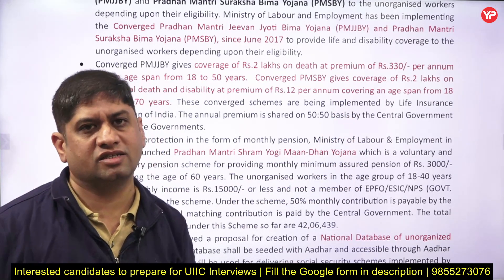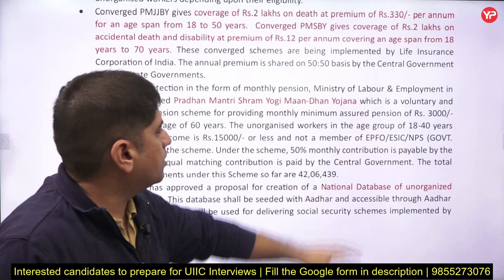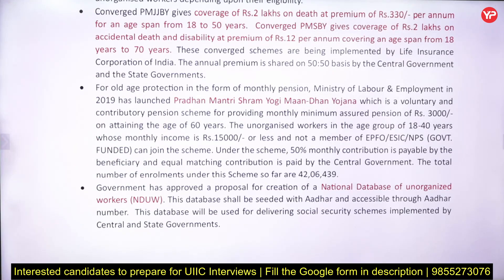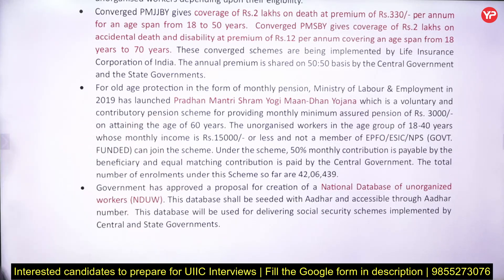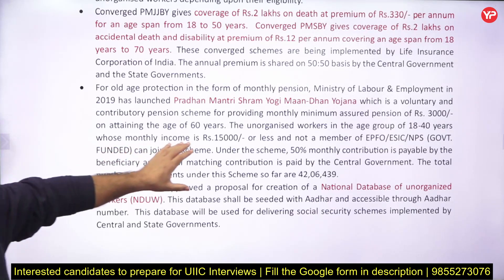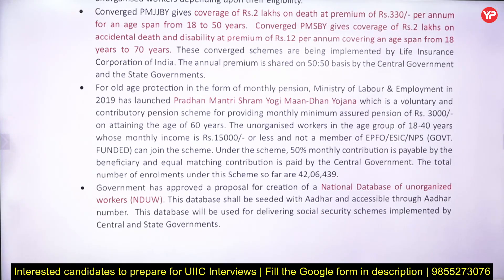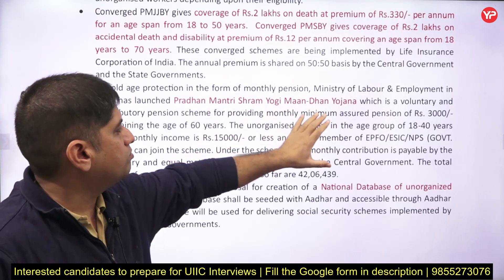Pradhan Mantri Shram Yogi Mandhan Yojana provides old age protection in the form of a monthly pension. It is a voluntary contributing pension scheme launched by the Ministry of Labour and Employment, providing a minimum monthly pension of 3000 rupees once you turn 60 years. It is for unorganized workers aged 18 to 40 with a monthly income less than 15,000 rupees who are not members of EPFO. You contribute 50% of the monthly contribution and the central government matches it.